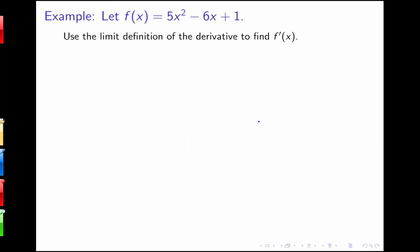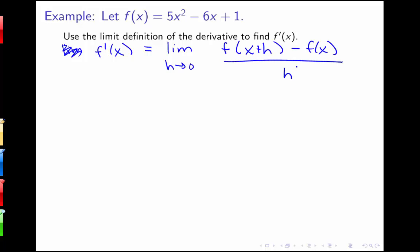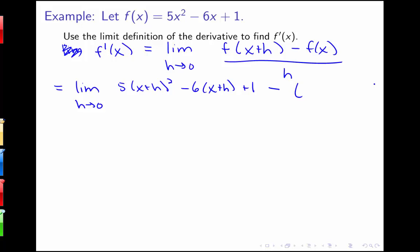Here's the example we want to look at. We want to use the limit definition of the derivative to find f prime of x, where f of x equals 5x squared minus 6x plus 1. So f prime of x equals the limit as h goes to 0 of f of x plus h minus f of x, all over h. I need to plug in x plus h: that gives 5 times x plus h squared minus 6 times x plus h plus 1, minus, and I have to be very careful with those parentheses because I'm subtracting the whole function f of x, which is 5x squared minus 6x plus 1. I'll need to distribute that negative sign across those parentheses.